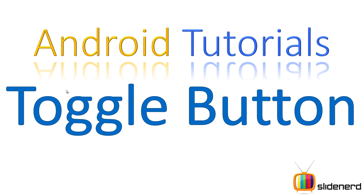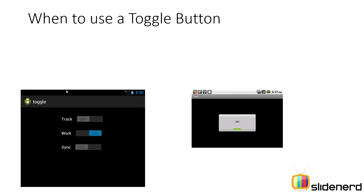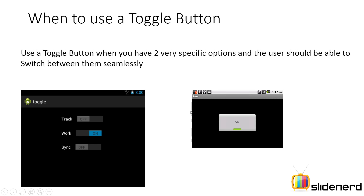Before we talk about anything, the first thing you want to see is what is a toggle button. These are the kind of buttons which are called toggle buttons in Android. We use them when something has only two states — either on or off, yes or no, or something like that. When you have two very specific options and you want the user to switch between them easily and effortlessly, that's when you should use a toggle button.